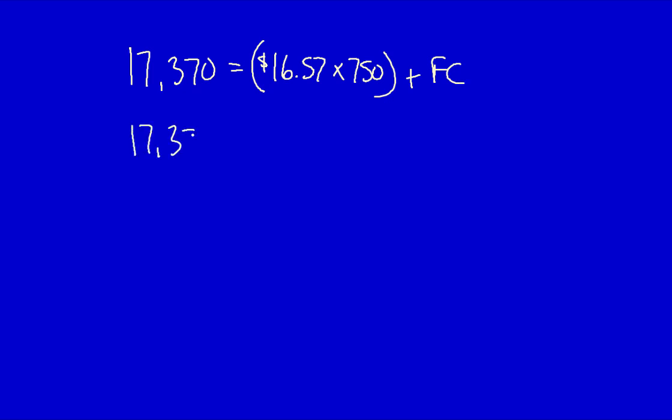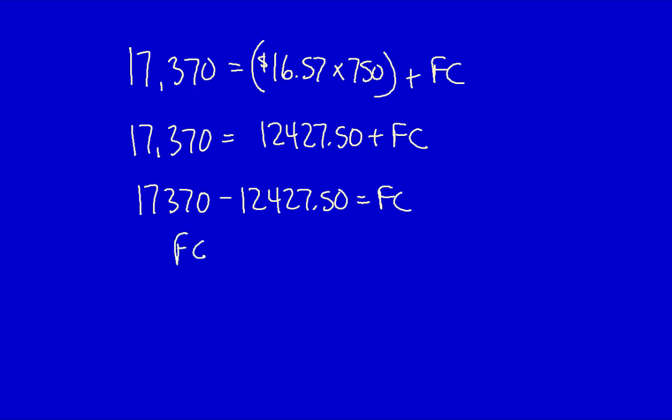$17,370 is equal to $12,427.50 plus fixed costs. $17,370 minus $12,427.50 is equal to fixed costs. Fixed costs is equal to $4,942.50. So my cost formula is total cost is equal to $16.57 times the quantity plus $4,943 of fixed costs.